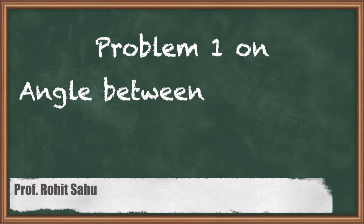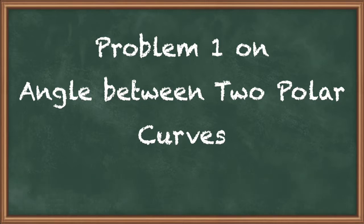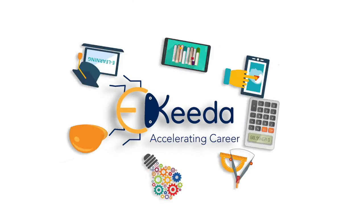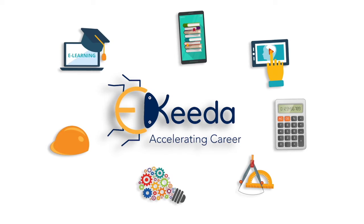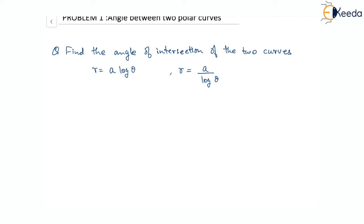Hello, in this session we will discuss a question on angle between two polar curves. This is the question: we have to find the angle of intersection of two curves, where the curves are r equal to a·log θ and r equal to a by log θ.